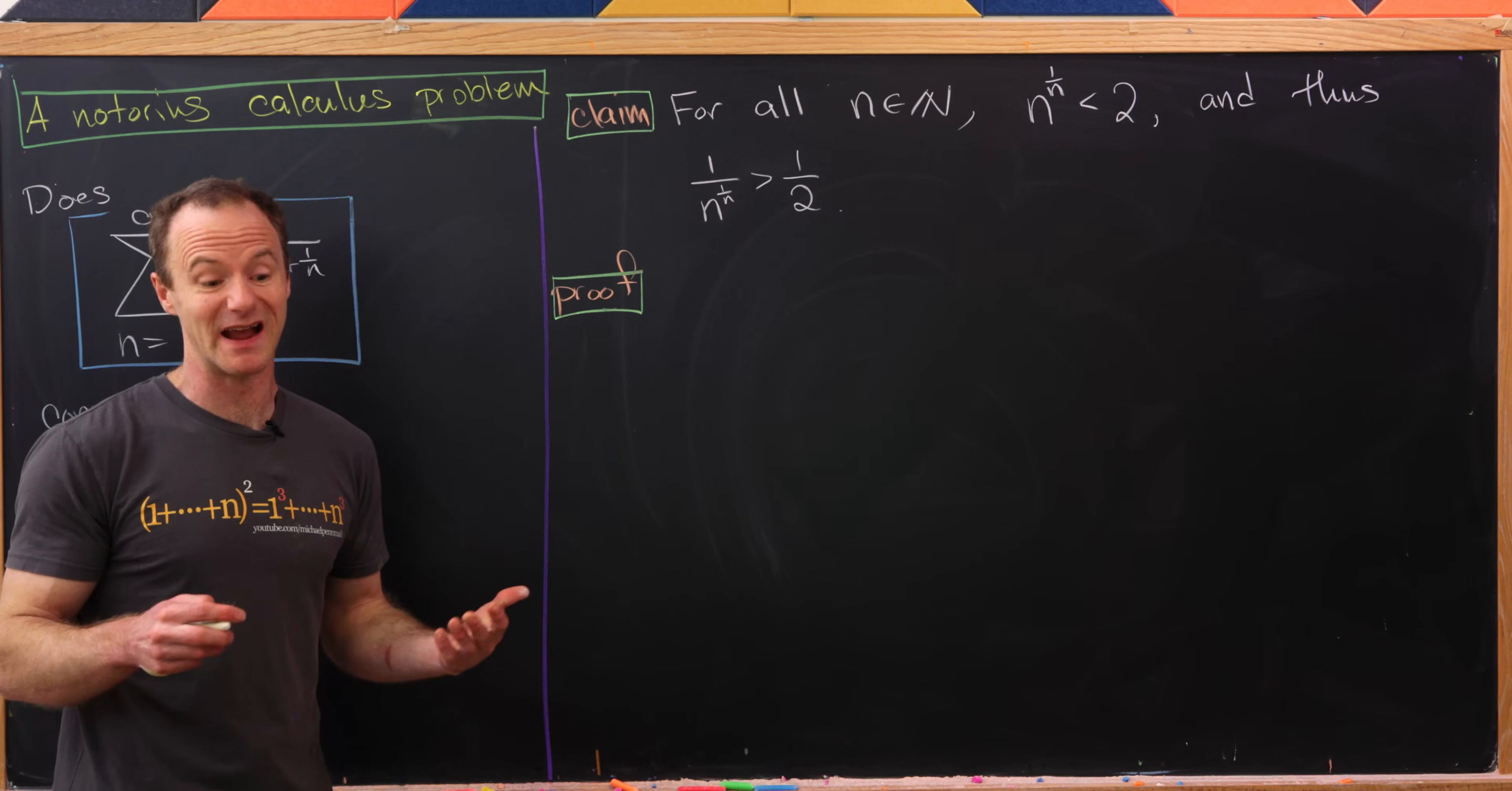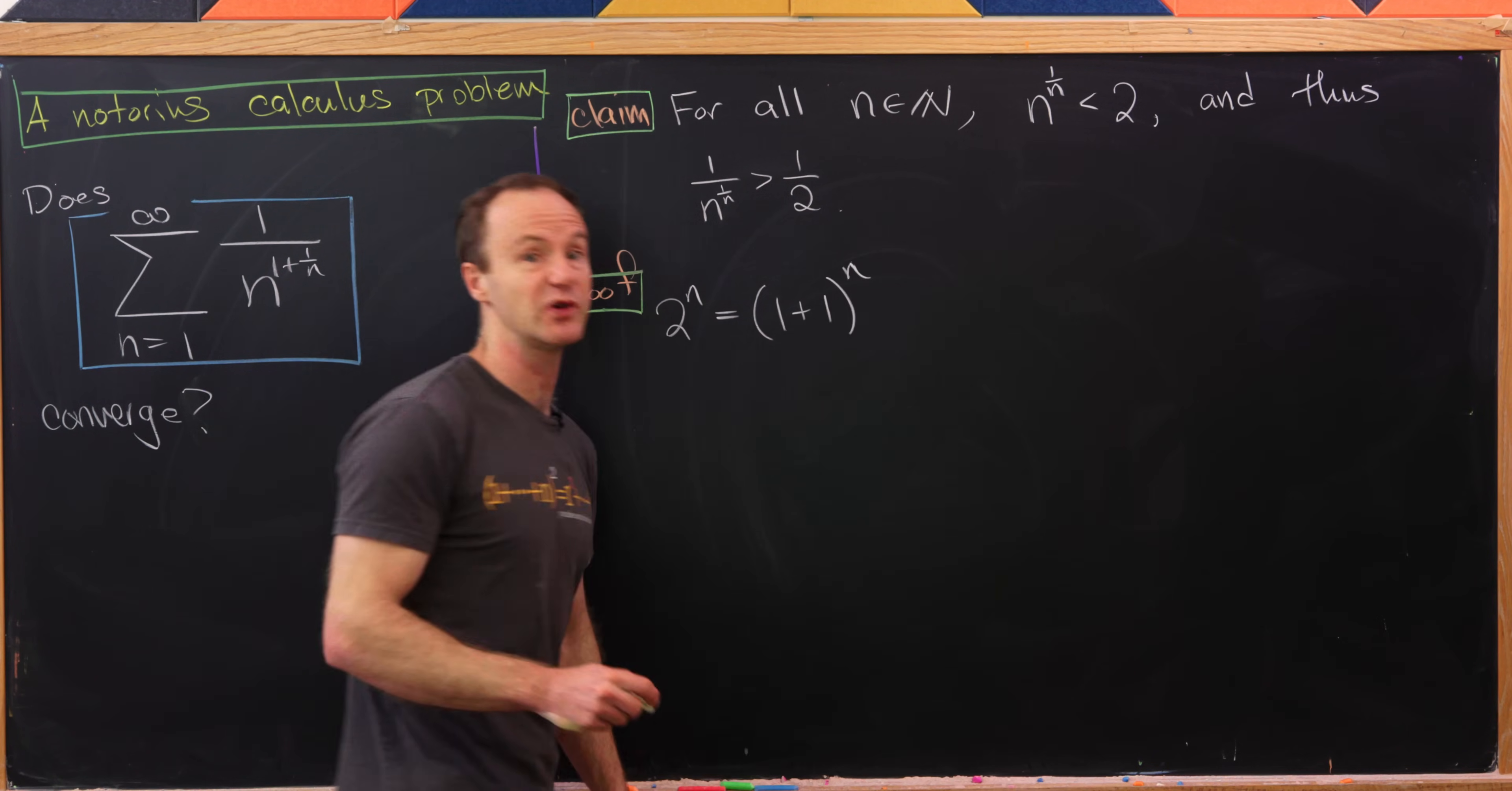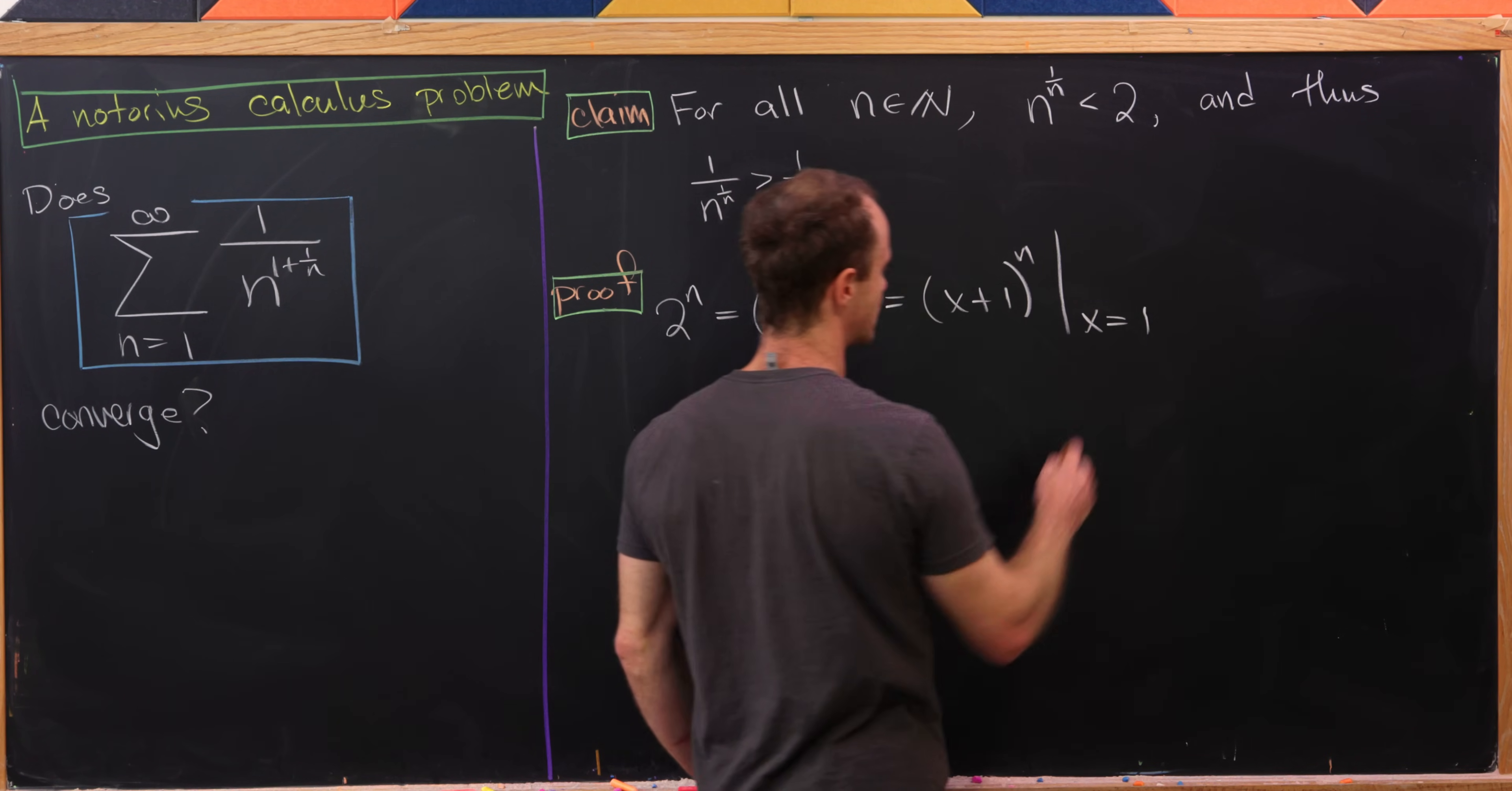Well, we're gonna do this with binomial expansion, which I think is a really nice approach. So let's take 2^n and write it as well (1+1)^n. I mean, we're really doing revolutionary stuff here. But now we're going to think about this as (x+1)^n where we set x equal to 1.